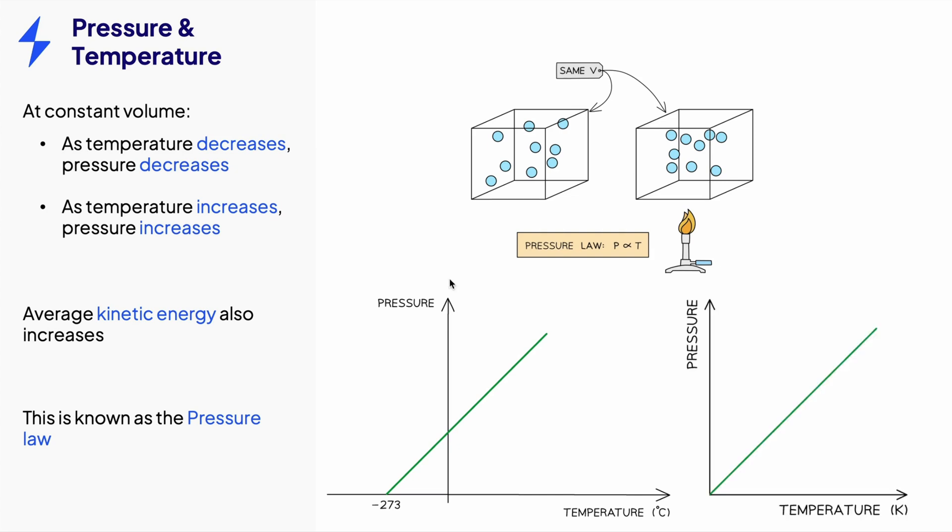The graph can also be drawn with a temperature in Kelvin. This is the same shape, except now it goes through the origin, at absolute zero, at zero Kelvin.